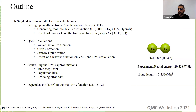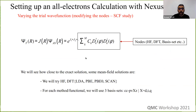Our trial wave function has a Jastrow part that handles dynamic correlation, while the static correlation comes from the antisymmetry determinant part. The biggest approximation in diffusion Monte Carlo is the fixed node approximation — the nodes come from the determinant. We're going to try multiple nodes: Hartree-Fock, DFT, and different basis sets. We generate the determinant part first before the Jastrow part.